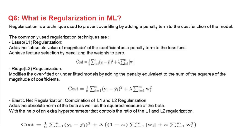Next question: what is regularization in ML? First explain what regularization is, how we achieve it, and the different methods. Regularization is a technique used to prevent overfitting. It adds a penalty term to the cost function. There are three types. The first is Lasso, also known as L1 regularization, which adds the absolute value of the magnitude of the coefficients as a penalty term. By doing this, it also achieves feature selection by penalizing weights to zero.